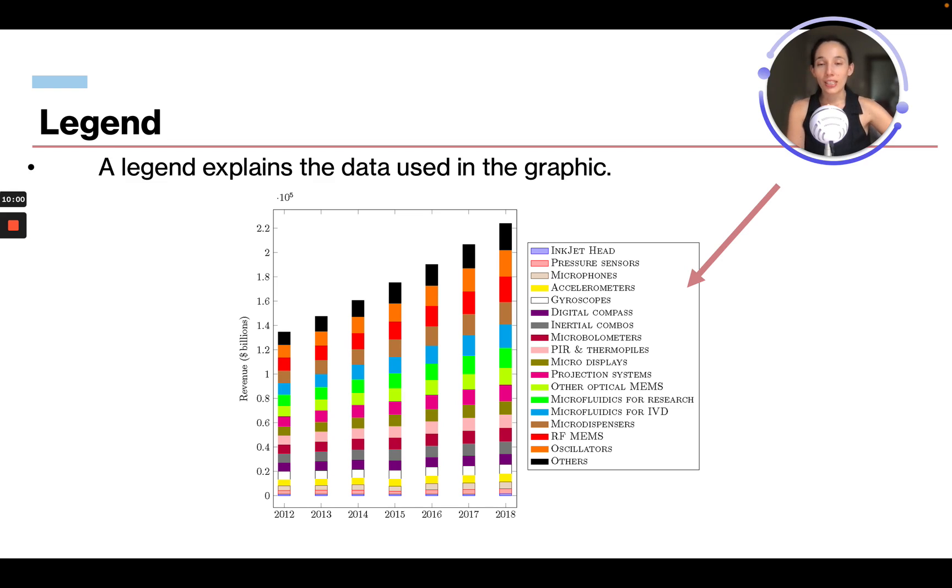A legend explains the data used in the graph. So here is our graphic and this is our legend. There's a lot of stuff going on. But if we look, we know that tan is the amount of microphones. And then we know that purple is an inkjet head. So this must be revenue and what they sold. We can see all the different things that they sold. If we want to know what color something is, like what the red is, we can come over to our legend and see the red is RFMEMS. I don't know what that is, but that's what accounts for this red.